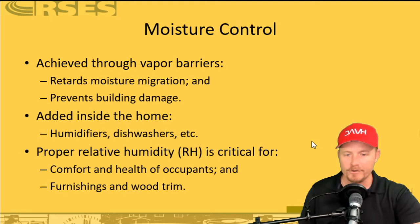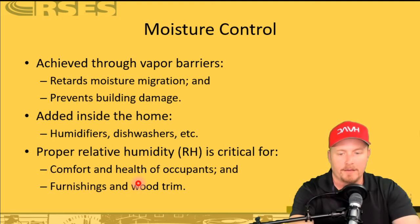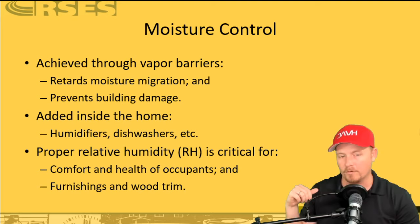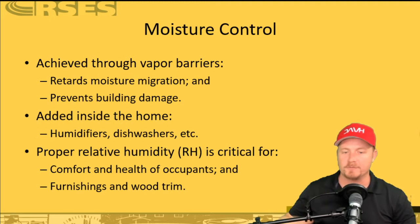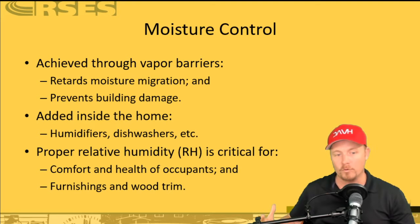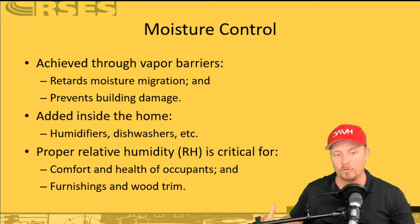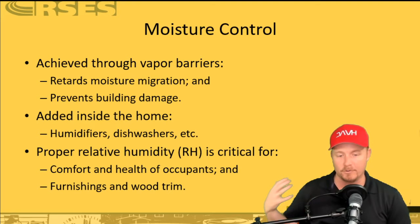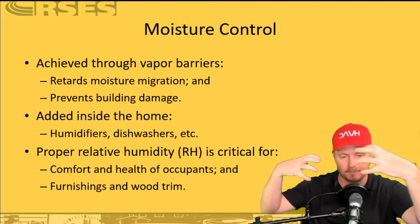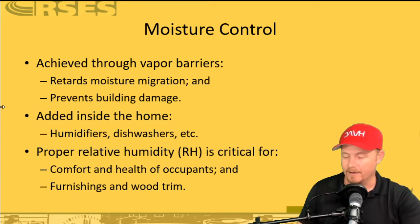We do want to control relative humidity so that furnishings, wood trim, pianos — things that are sensitive to relative humidity — don't have problems. We ran into this at a big custom home where they were having all sorts of issues with crown molding cracking and coming apart. It was because they were having big moisture fluctuations. When you construct a house initially, you need to control the relative humidity in the space, allow that wood to acclimate, and then assemble it. If you assemble it while the house still has high relative humidity and then dry it out, a lot of times it's going to pull back and crack.